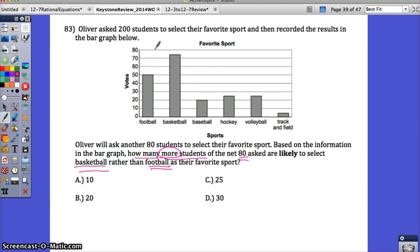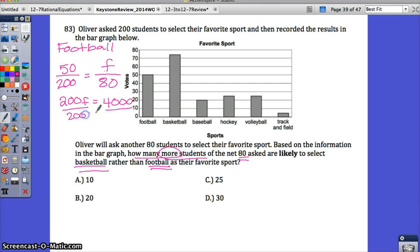So the first thing you need to do is find out how many students out of the next 80 are likely to select basketball and how many are likely to select football. We can use the bar graphs to make a prediction. So I like to set up a proportion. To figure out how many students out of the next 80 would select football, I would look at how many students selected football now out of the 200 that were polled. So 200 students is the total for this graph, and 50 selected football. The next survey is going to be out of 80 students. Cross-multiply and divide, and I can see that 20 out of the next 80 will select football.